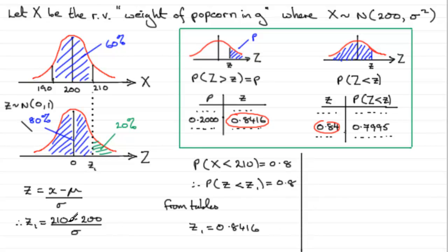So, if we just come down here now, we can use this result. Instead of Z1, we can just write 0.8416 equals 210 minus 200, which is 10 then, divided by sigma. If we rearrange this equation to make sigma the subject, sigma is going to be 10 divided by 0.8416. Work that out, and what you end up with is 11.8821, and so on.